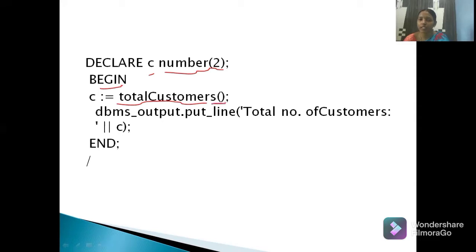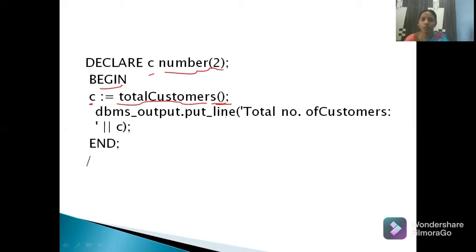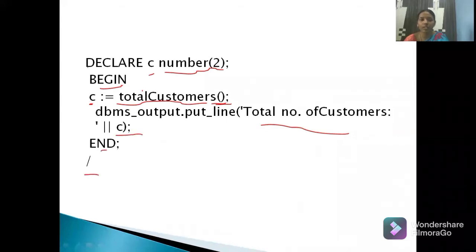In the anonymous block: DECLARE c NUMBER; BEGIN c := total_customers(); — remember all function calls must end with parentheses. The total_customers function returns the number of customers from the table, and that value is copied into variable c. Then DBMS_OUTPUT.PUT_LINE('Total number of customers: ' || c) displays the value. This block is written in the SQL prompt or in Notepad using the @cmd approach.